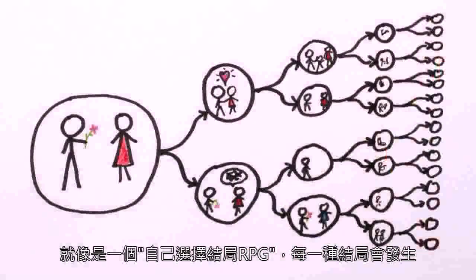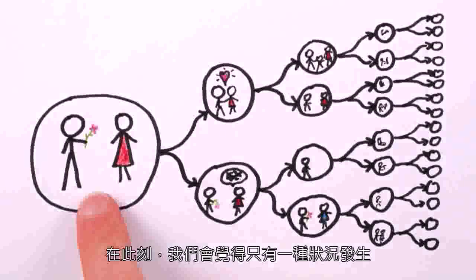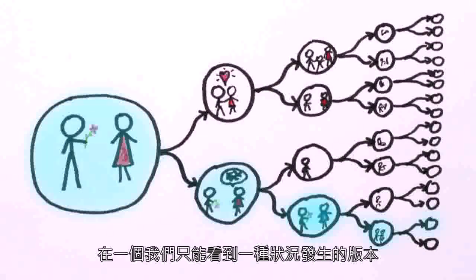You know, a choose-your-own-adventure where every possible story happens. In this scenario, we'd think that only one possibility happened because we'd be stuck on one of the branches, in a version of ourselves that only sees one possibility happen.